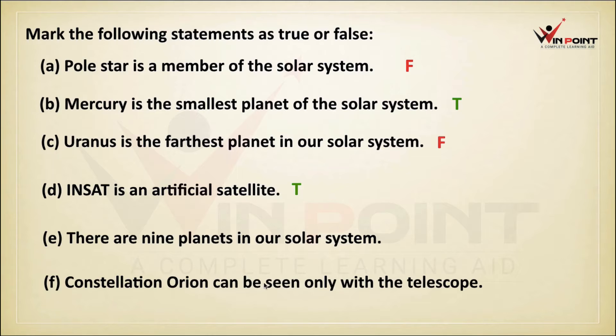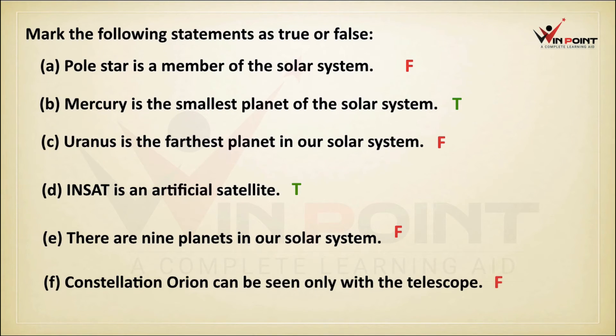There are nine planets in our solar system — False, there are only eight planets. Constellation Orion can be seen only with the telescope — this is also a false statement.